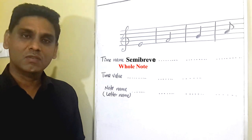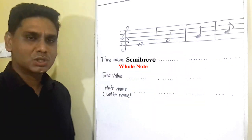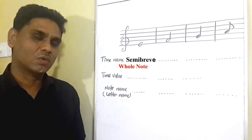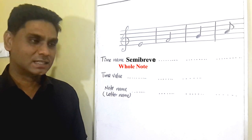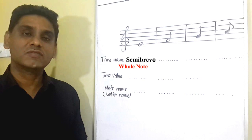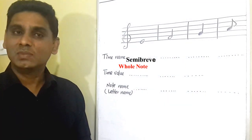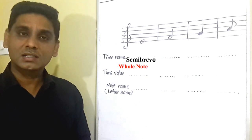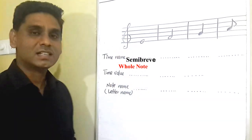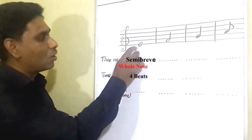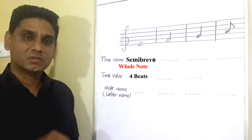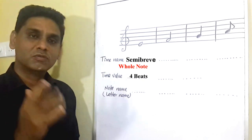Now let's see what is the time value of a music note. Each of these music notes has its own time values. Time values are measured by beats. You might wonder what is the meaning of beat. Beat is a small unit of a rhythm — it occurs within a small period of time. Beat is quite similar to the seconds of a clock: one second is one beat, two seconds equal two beats. If this note has four beats, the sound of this music note lasts for four beats — one, two, three, four.